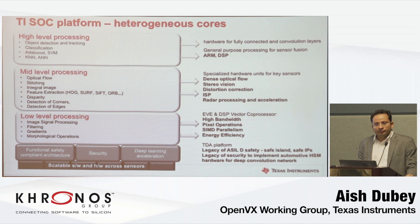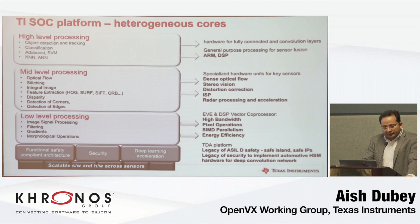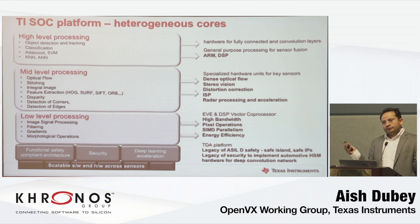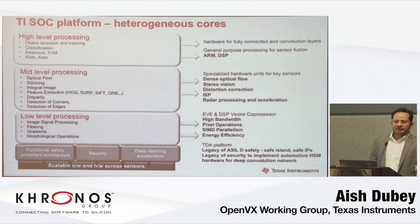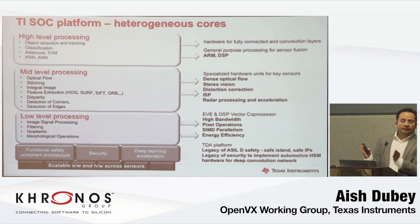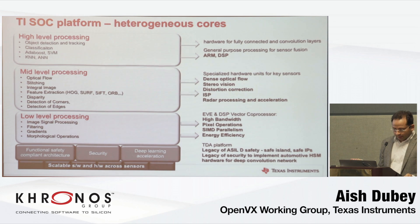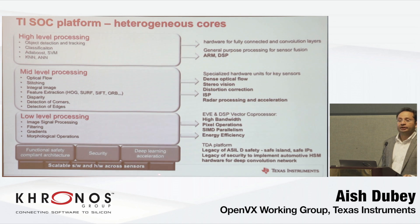A lot of low-level processing can also be done on DSP. Mid-level processing cores handle tasks like optical flow and image stitching. Another component, like ARM or DSP, handles high-level processing such as classification — decision trees and that sort of thing. The fourth component is purpose-built hardware accelerators for deep learning, matrix multiplication, and image signal processing.